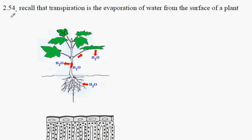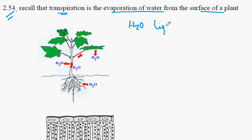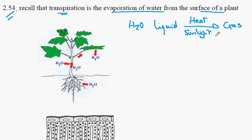This is Edexcel GCSE Biology, syllabus statement 254, the transport section relating to plants. We're looking at the evaporation of water from the surface of a plant, a process called transpiration. For evaporation to occur — where water goes from the liquid phase to the gas phase — we require heat. That heat is provided by sunlight as it's absorbed by the leaf structure, where light energy is converted into heat.